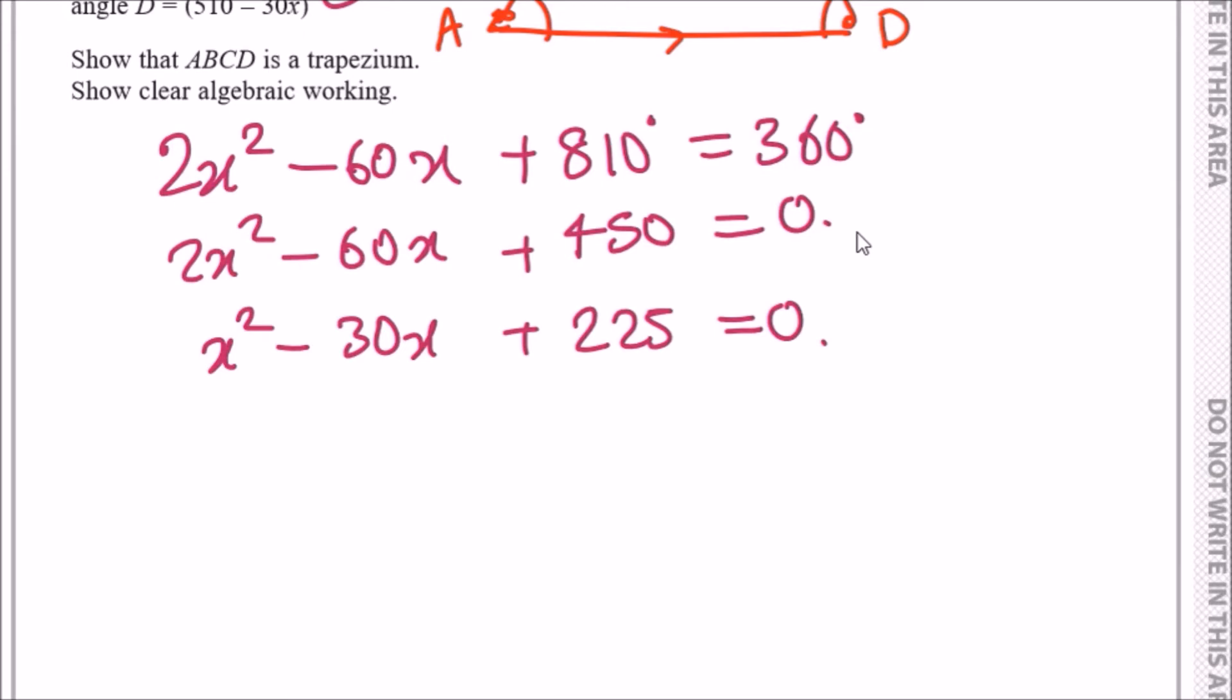Using the quadratic formula, we can say x equals minus b plus or minus the square root of b squared minus 4ac all over 2a. Remember this formula is in the beginning of the book.